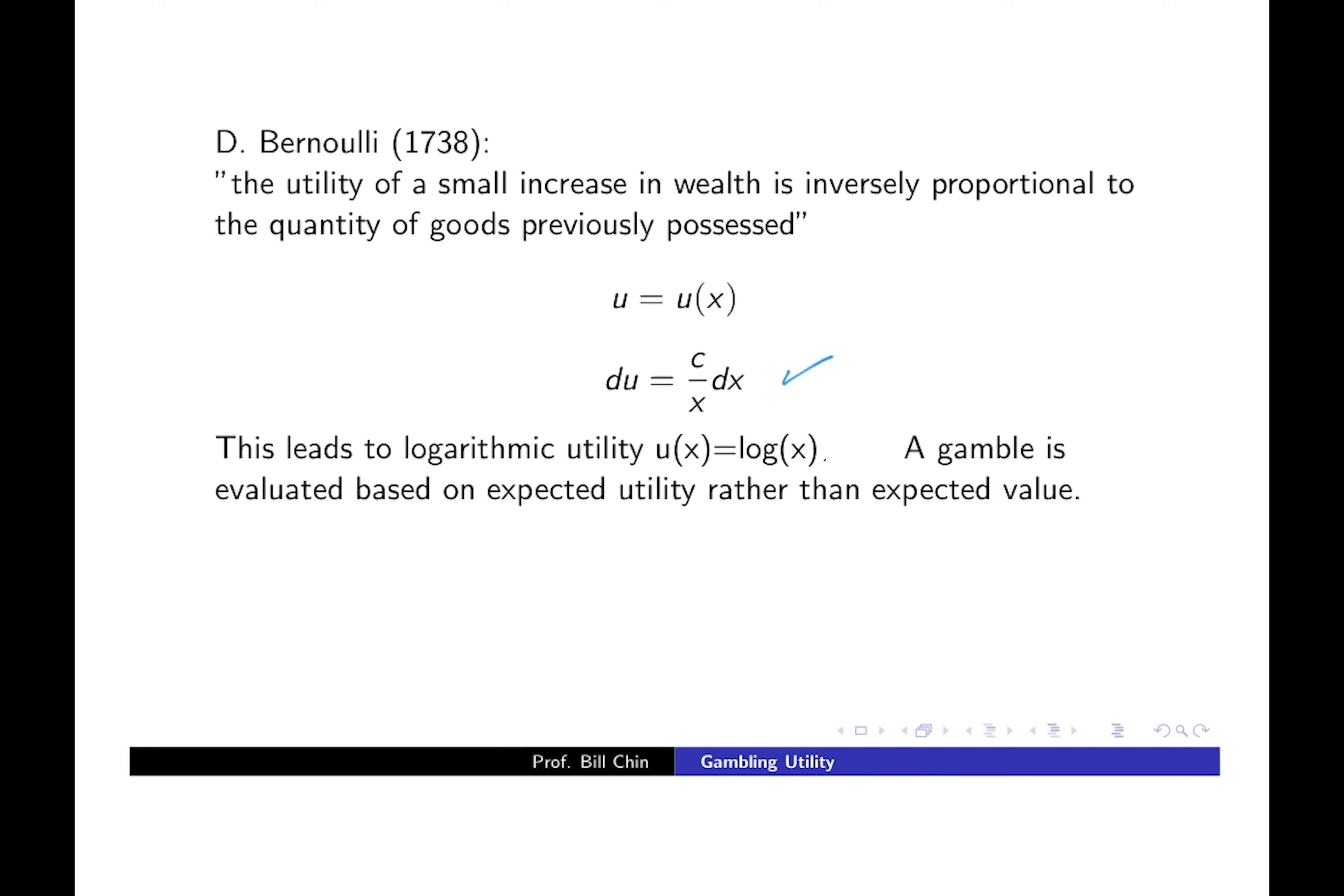A gamble is evaluated based on expected utility rather than expected value. In the modern theory a lot of utility functions are entertained other than just the log function. I should add that utility functions are not really the end of this discussion. For example, the psychologists Kahneman and Tversky invented what's called prospect theory as a revision of utility functions and behavior under risk, and it earned Kahneman a Nobel prize in economics in 2002.